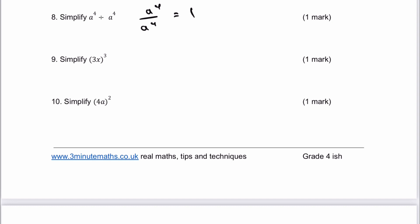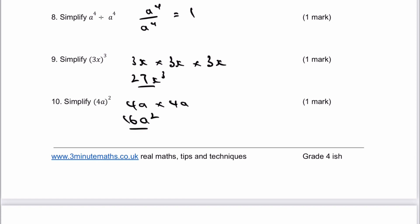The next one is 3x cubed. That's the same as 3x times 3x times 3x. Multiplying out the numbers first: 3 times 3 times 3 is 27. Then x times x times x is x cubed. So the answer is 27x cubed. We can apply exactly the same principle with the next one: 4a times 4a is going to be 16a squared, and that's the answer to number 10.